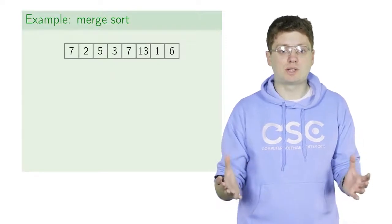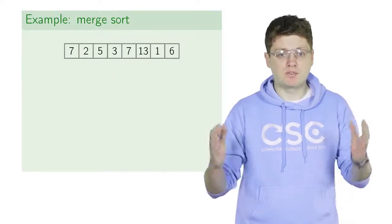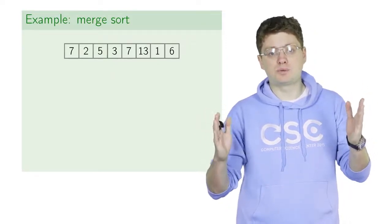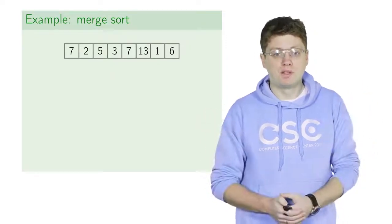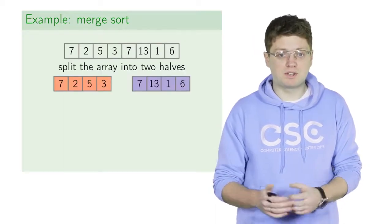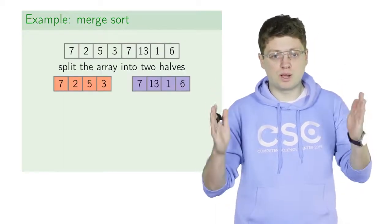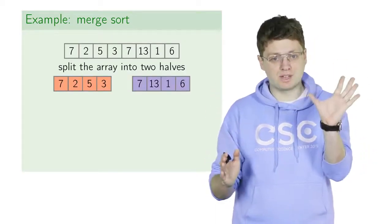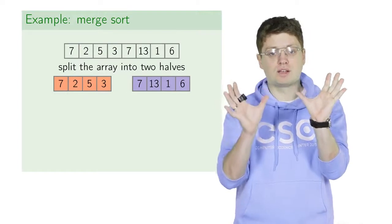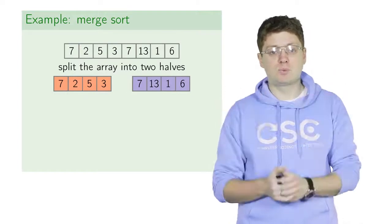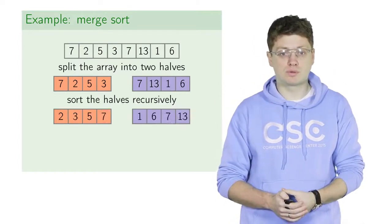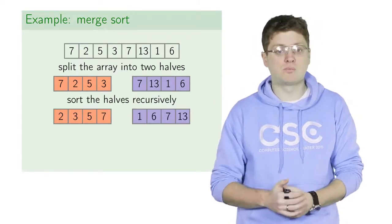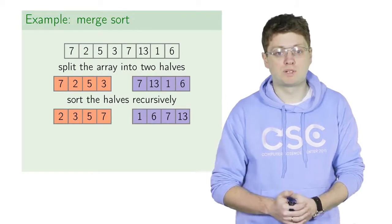Let's show a toy example. We are given an array of size 8 and we are going to sort it. First, we split this array into two halves of size 4 — the left half and the right half. Then we make two recursive calls to sort both these parts.